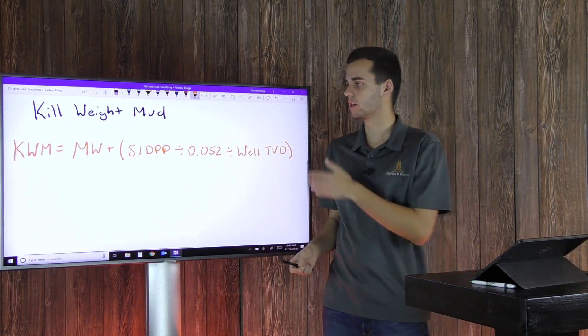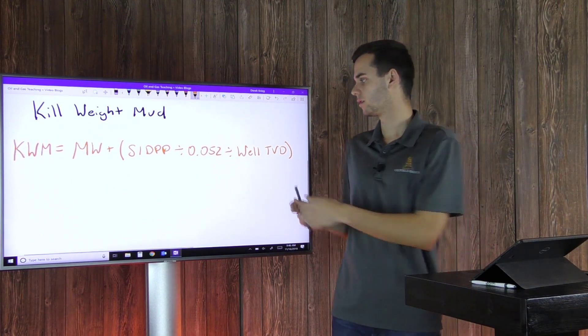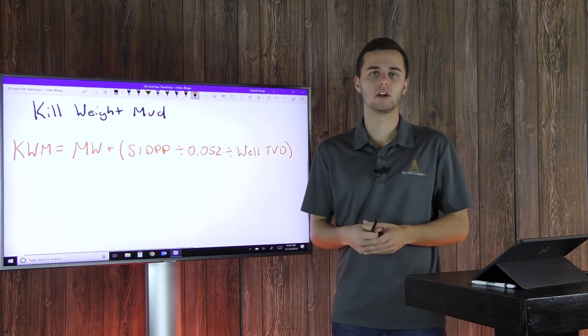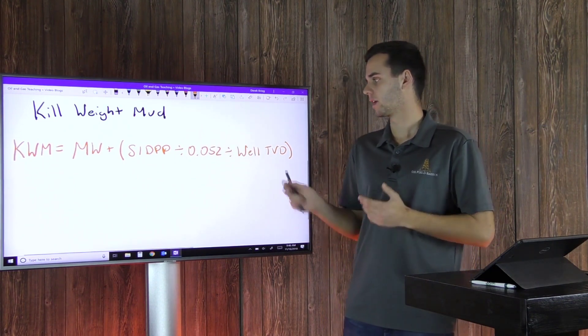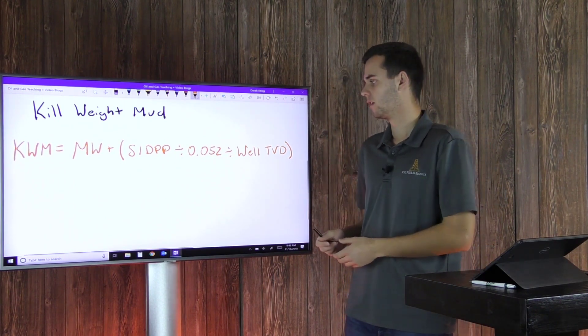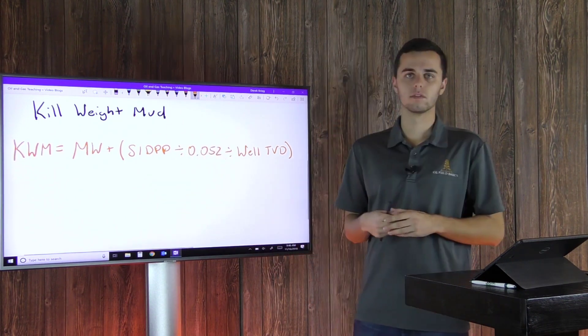So your KWM, your Kill Weight Mud, equals your mud weight, that's the current mud weight in the well, plus—this is all in parentheses so you do this first—your shut-in drill pipe pressure, that'll be in psi, divided by constant 0.052, and divided by your well TVD, which will be in feet. Once you solve this part, then you'll add it to your mud weight, and that'll be your Kill Weight Mud.